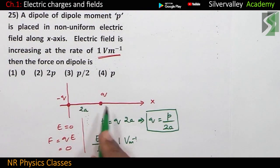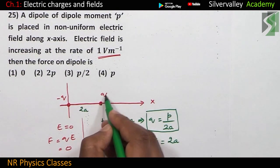What is the electric field at this point means? We have to consider this length. So, instead of L, let me consider 2A. Implies electric field equal to 2A into 1 is 2A. Now, force on this charge.